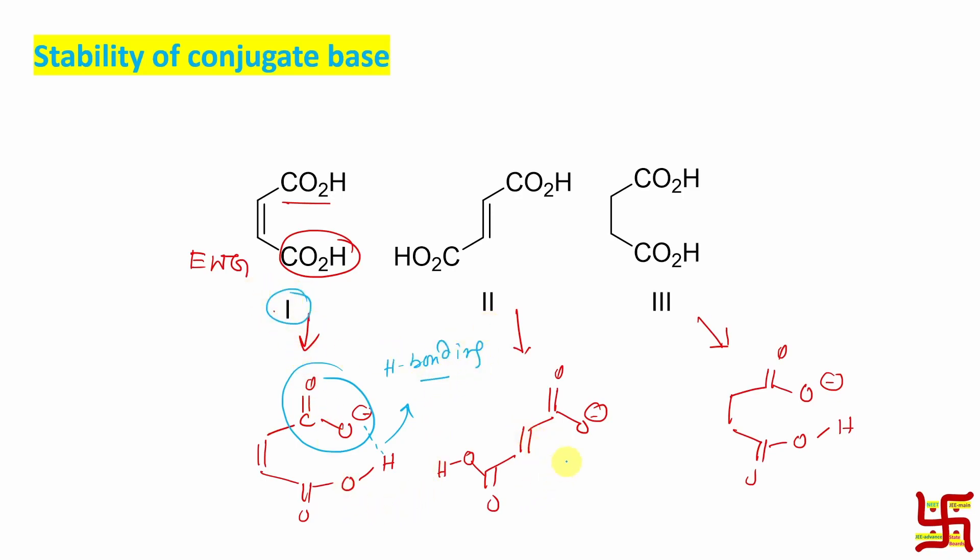Now second one, second one is trans. So hydrogen bonding is not possible. By the way, first one is cis isomer, second is trans isomer. So they are far apart, these two carboxylic acids.